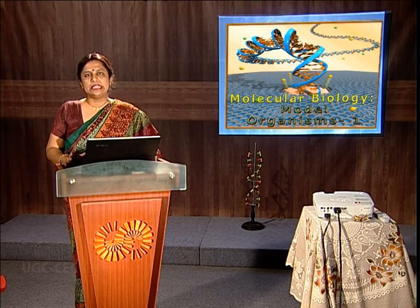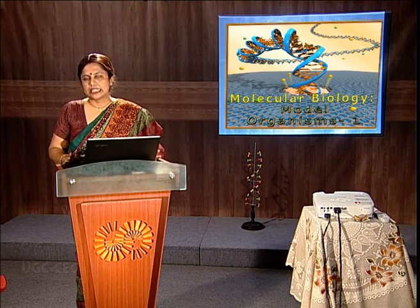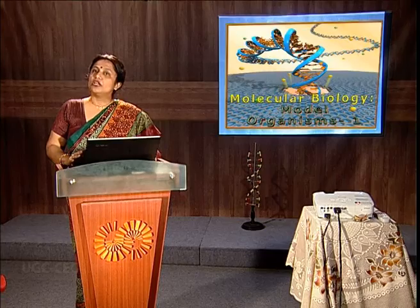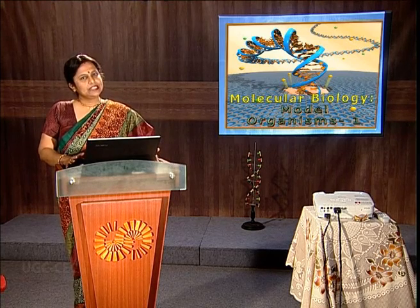We have discussed the importance of life on earth, what features should be present in a living organism, and how model organisms help us study living organisms better. These model organisms can be divided into five important categories based on the five-kingdom classification system. We highlighted important model organisms in the categories of viruses and bacteriophages, prokaryotes — eubacteria and archaea — and the protists community. Thank you.